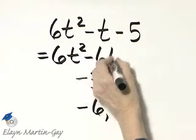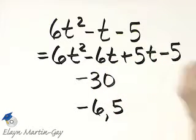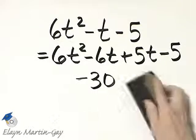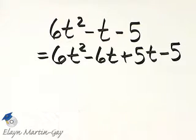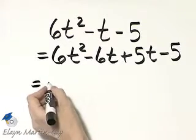So that's minus 6T plus 5T minus 5, and I've rewritten but I haven't changed, because negative 6T plus 5T is still negative 1T or negative T. But now let's factor by grouping.